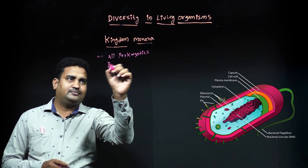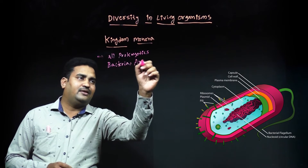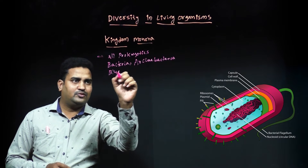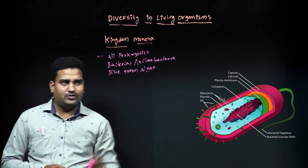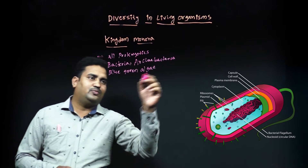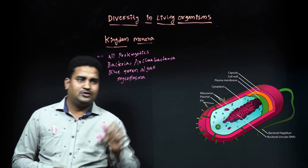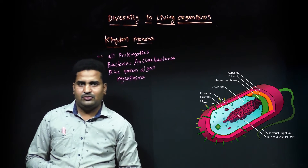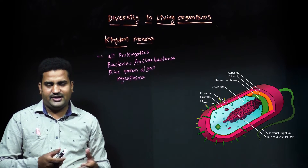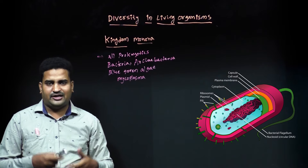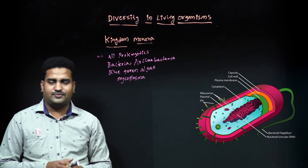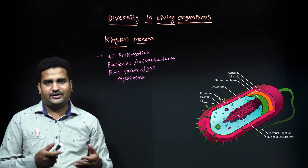Kingdom Monera includes bacteria, archaebacteria, and blue-green algae. Blue-green algae is also called cyanobacteria, and mycoplasma. So all these are prokaryotic organisms.